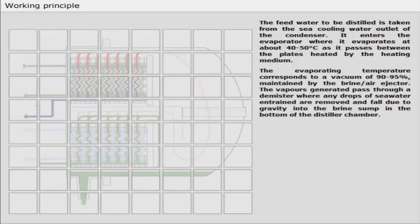The evaporating temperature corresponds to a vacuum of 90 to 95 percent, maintained by the brine air ejector. The vapors generated pass through a demister where any drops of seawater entrained are removed and fall due to gravity into the brine sump in the bottom of the distiller chamber.